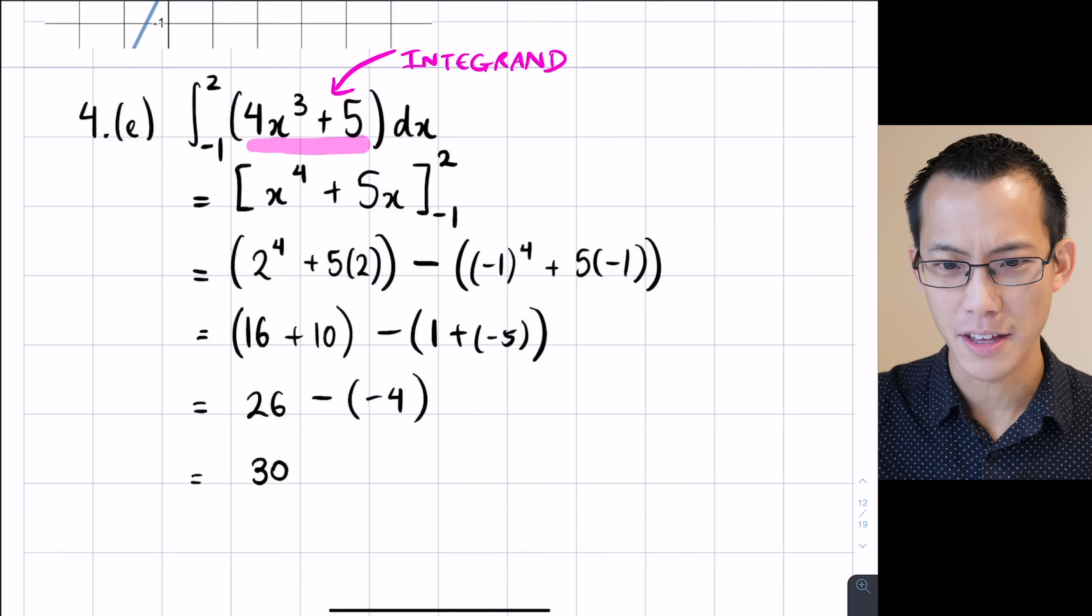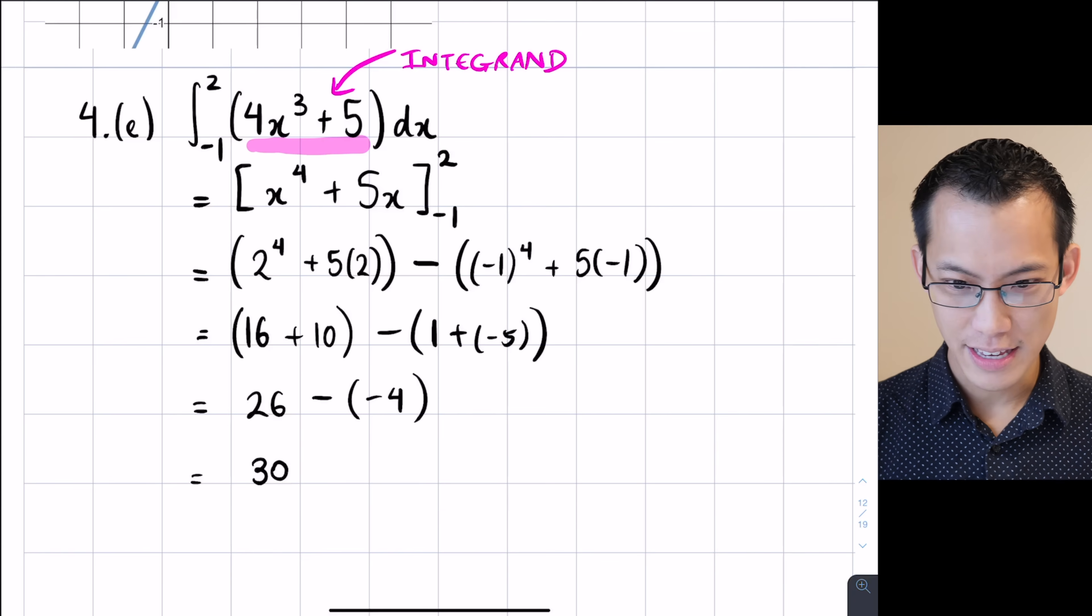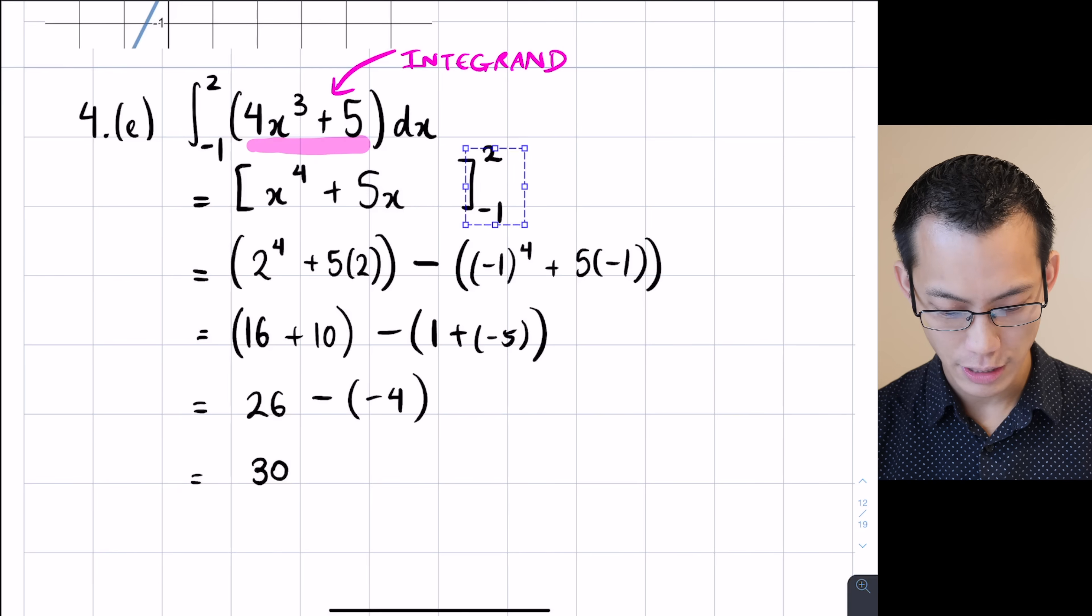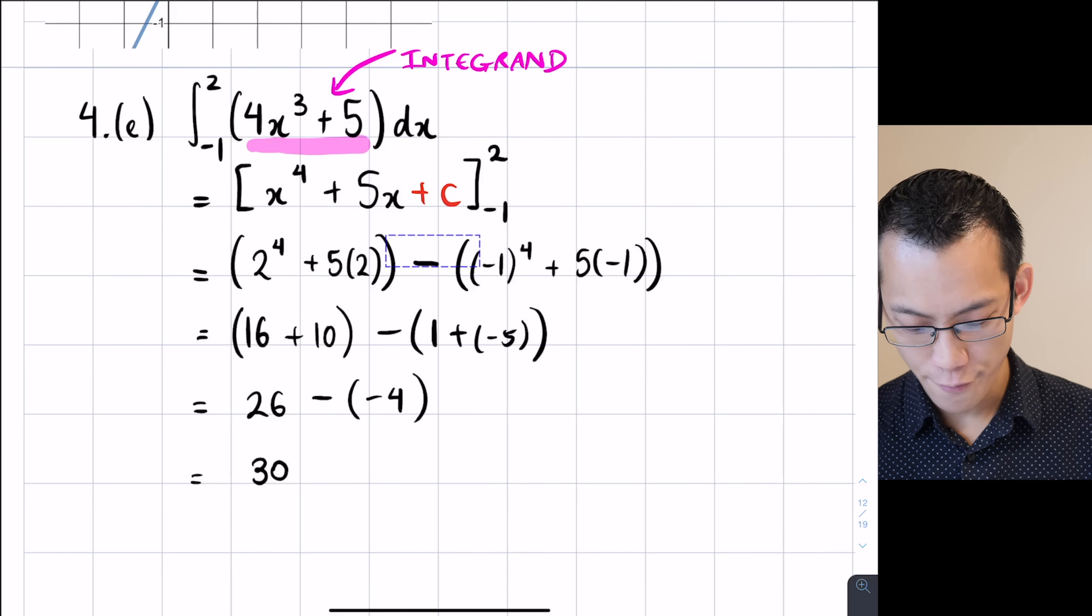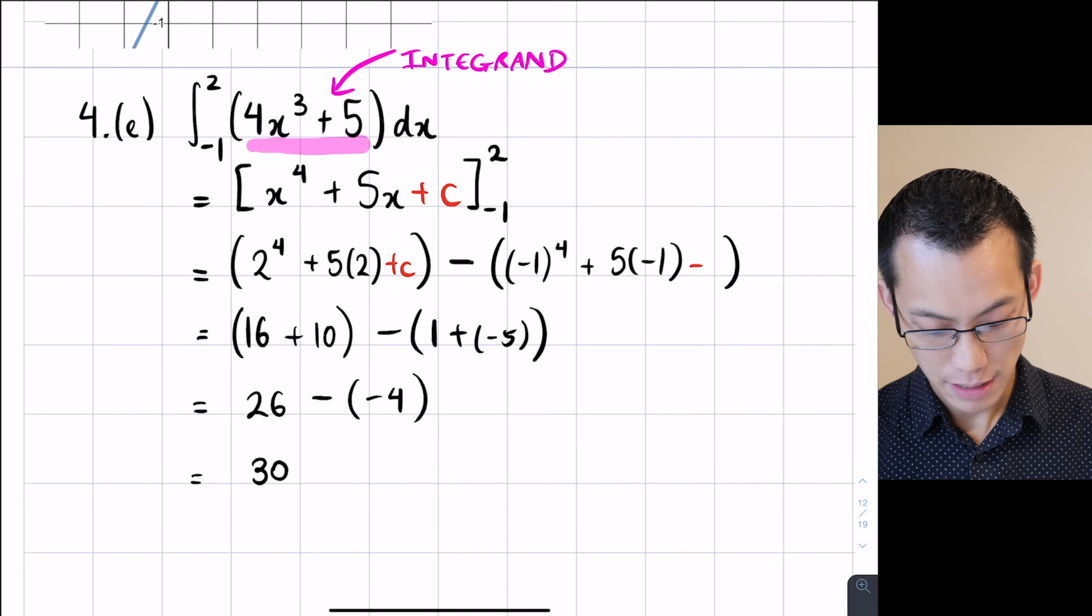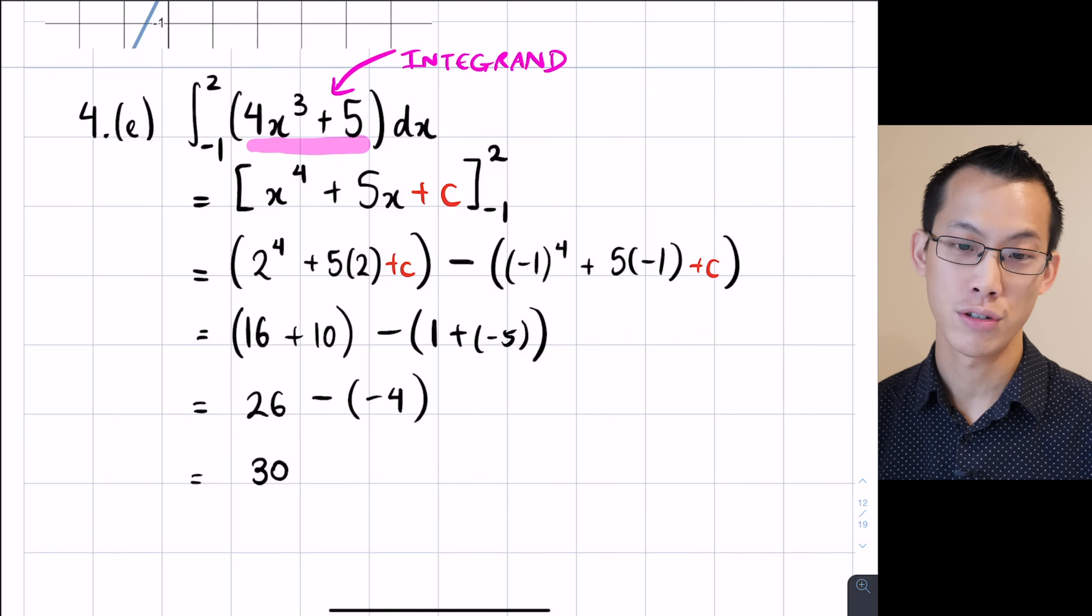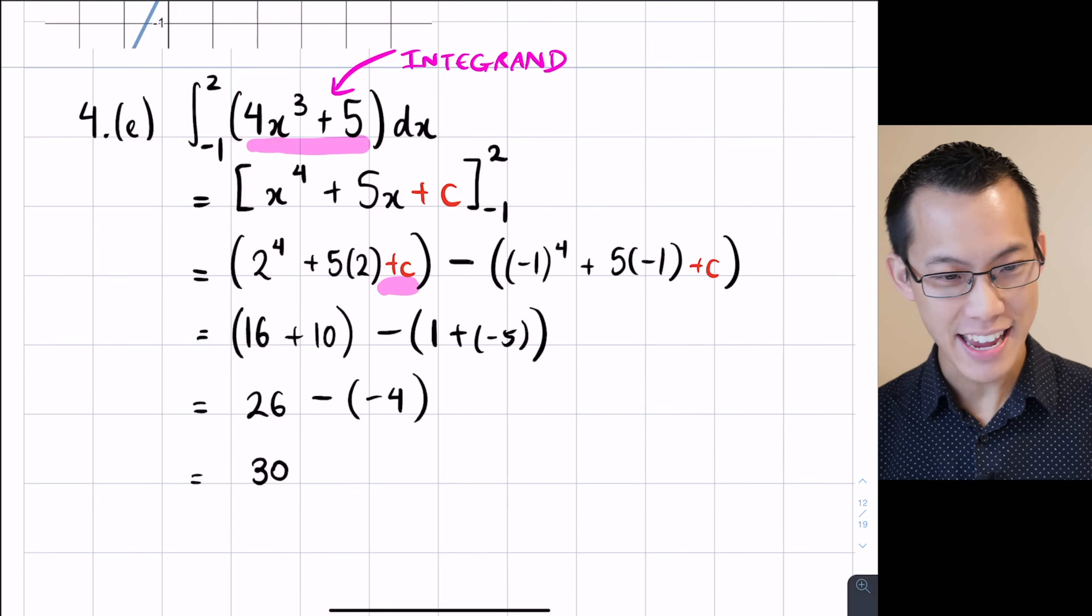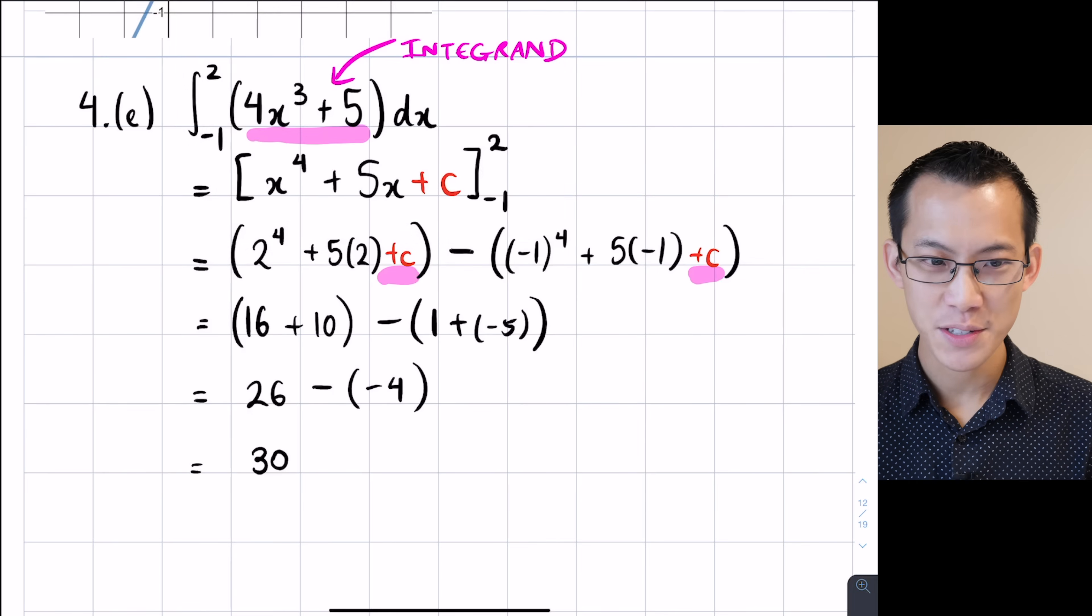So, a quick note. Some people, I think someone said something about the plus C. Where'd that go, right? This constant of integration, why doesn't it appear? If I were to put the plus C in here, let's actually put it where we normally would, which is when we integrate. What will happen is when I do my F(b) and my F(a), you might notice that plus C appears in both of them. The plus C, as a constant, it's independent of X. So, when X equals negative 1, C is still C. And when X is equal to 2, C is still C. So, you can see that the plus C here and the plus C here, they're just going to cancel out. So, we get an answer of 30.